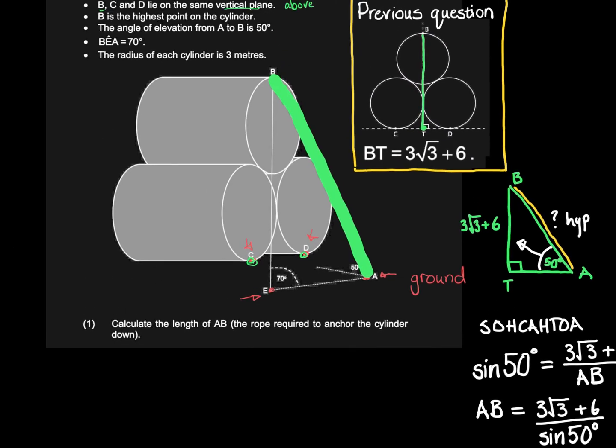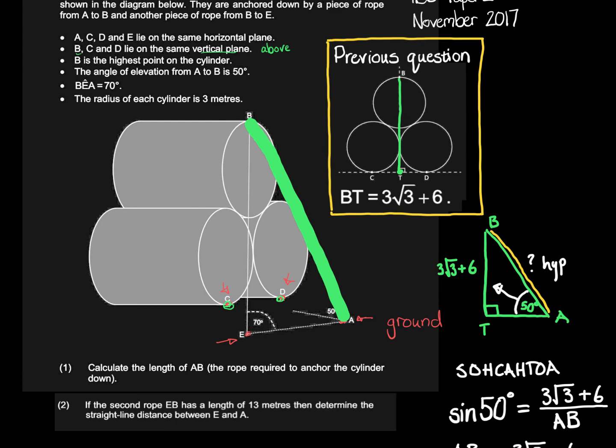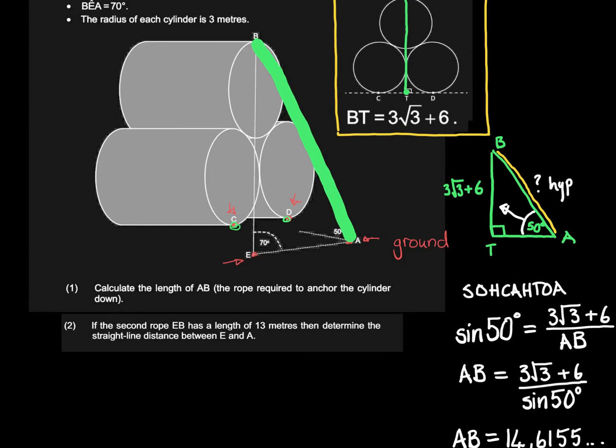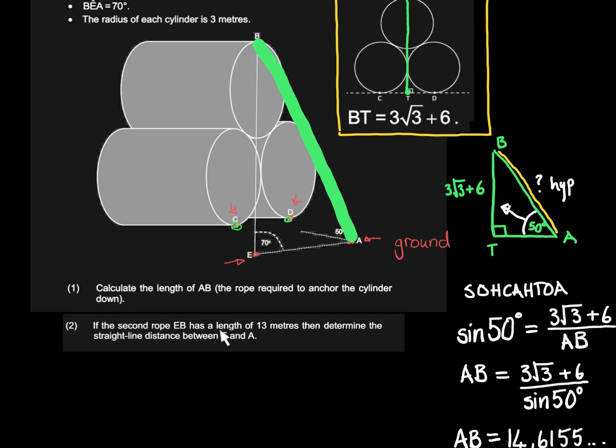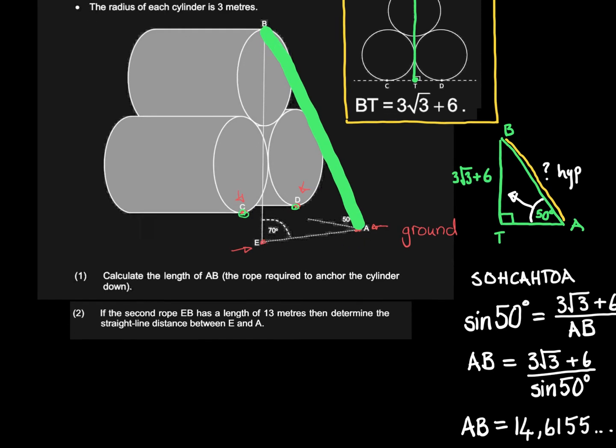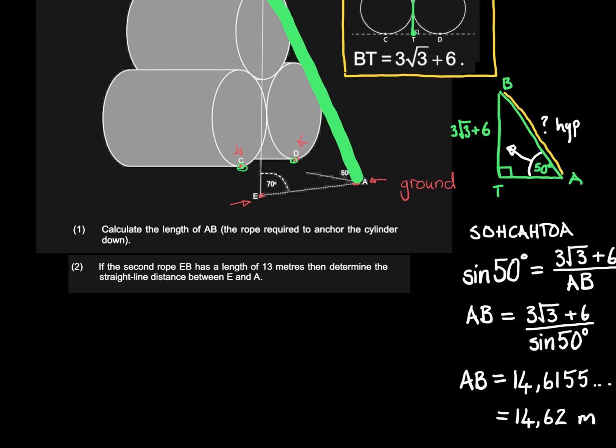Now let's look at the next question which says if a second rope EB has a length of 13 meters, then determine the straight line distance between E and A. I'm going to redraw this triangle. As I draw this, pay attention to the fact that this is not a right angle triangle, which means we can't use normal sin cos tan. We have to do something else.